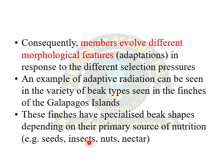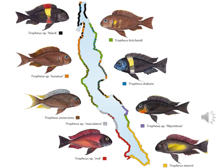The finches have specialized beak shapes depending on their primary source of nutrition. The primary source of nutrition may be seeds, insects, nuts, or nectar. Here is a classic example of adaptive radiation in the form of African cichlid fishes. In this diagram you can observe different fish species evolving in different niches of the lake, and according to their environment they make changes in their bodies. This is called adaptive radiation.